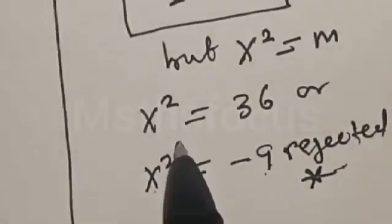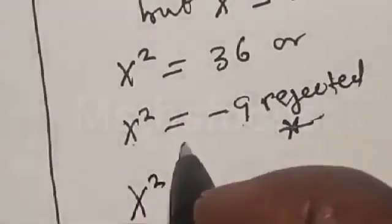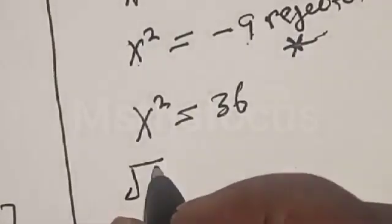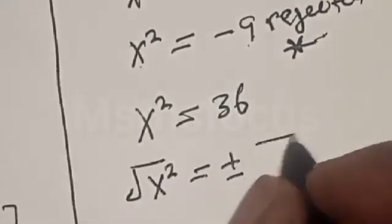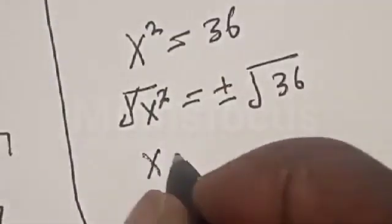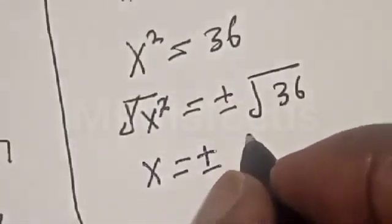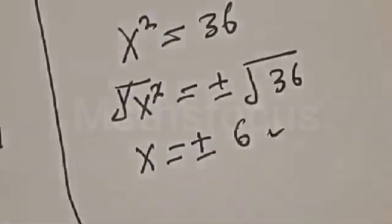The only valid solution is x squared equals 36. Taking the square root of both sides: x is equal to plus or minus square root of 36, so x is equal to plus or minus 6.